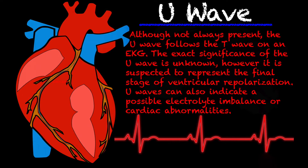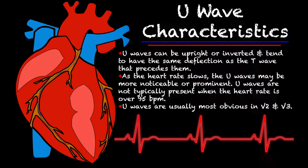Let's talk about some of the characteristics of U-waves. U-waves can be upright or inverted and they tend to have the same deflection as the T-wave that precedes them. The T-wave does tend to be bigger than the U-wave, but if the T-wave is upright, the U-wave is typically upright, and vice versa — if it's inverted, then it's typically inverted as well.